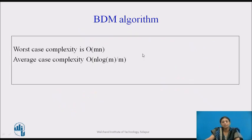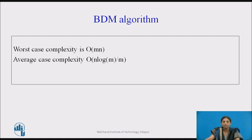The worst case complexity of the BDM algorithm is O(m·n), whereas the average case complexity is O(n log m / m).